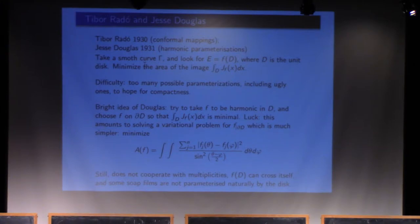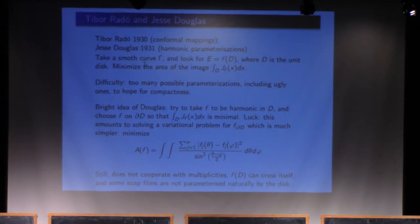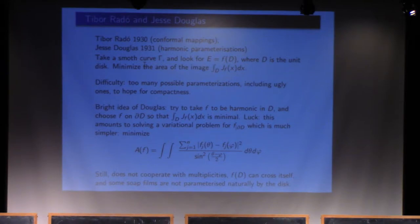The first approach, due in particular to Jesse Douglas, considers a Plateau problem with parametrizations by a disk. You start from a smooth curve gamma. You try to find a surface as the image of a disk by a mapping F whose restriction to the circle goes along the curve, and whose area is minimal. You compute area using the Jacobian derivative, integrate it, and minimize.